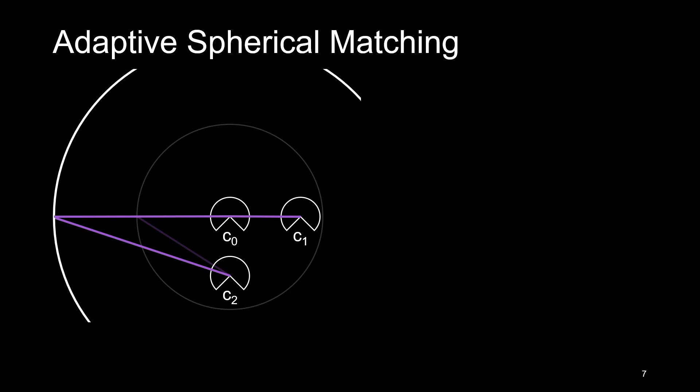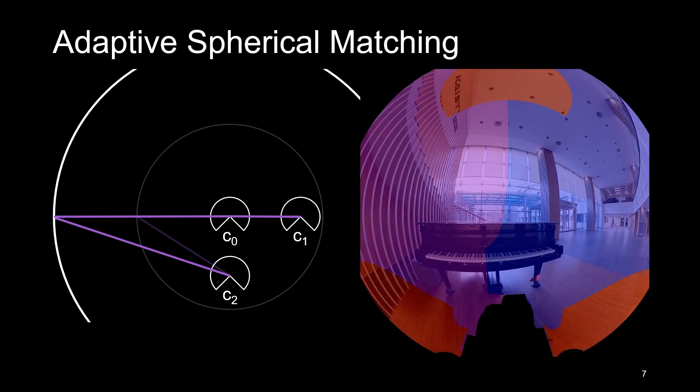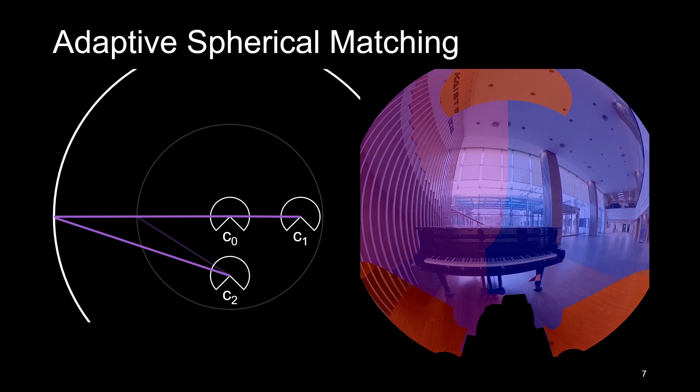As a large displacement is desired, we select, for each pixel, a camera that shows the maximum displacement. We show here the sweeping volume obtained with this approach. Each overlaid color represents a different selected camera for matching.